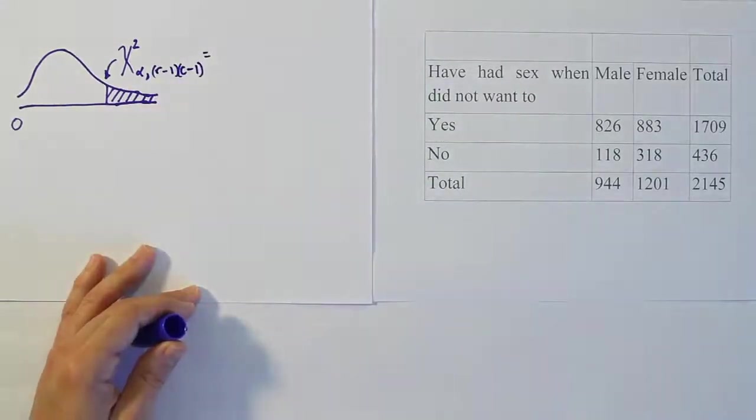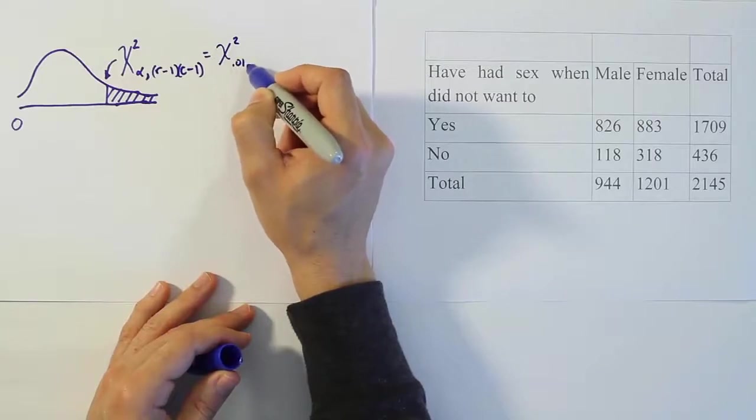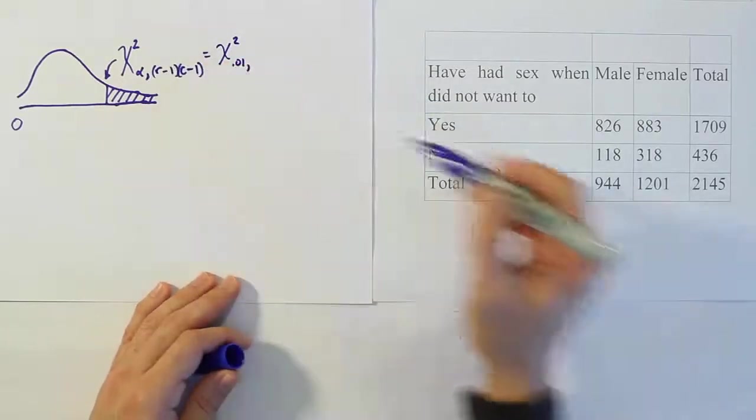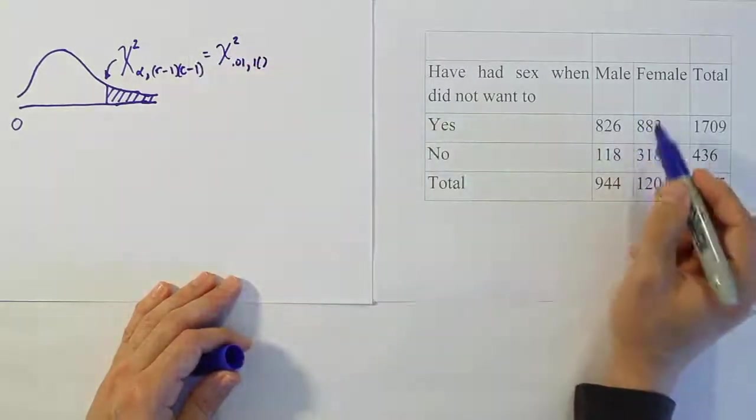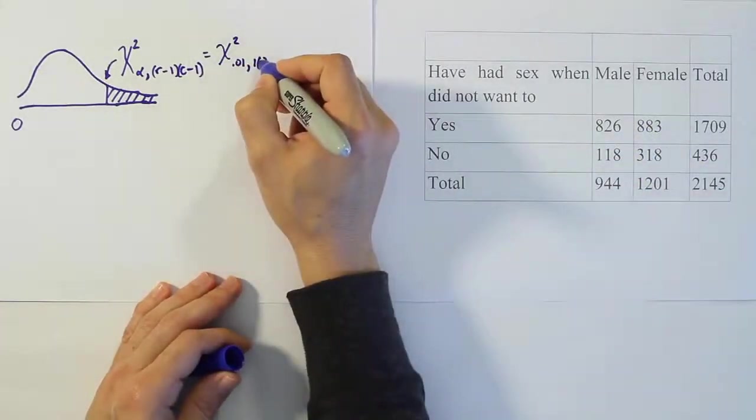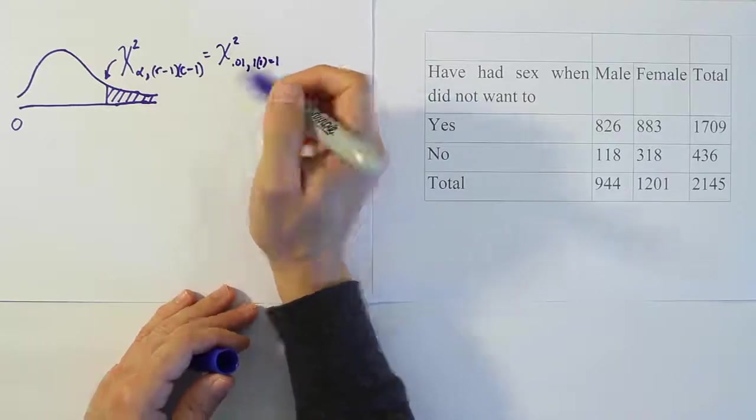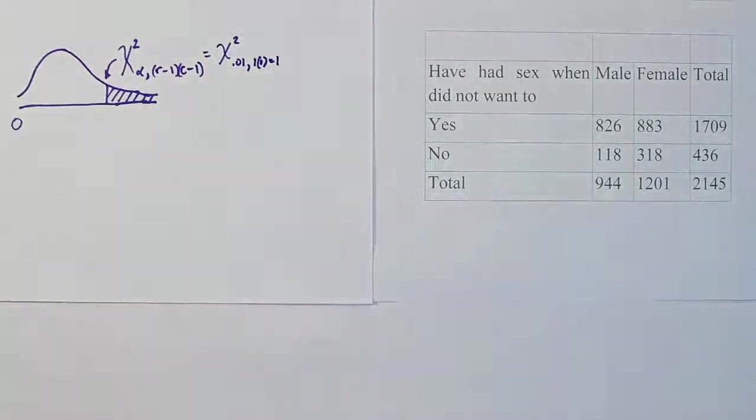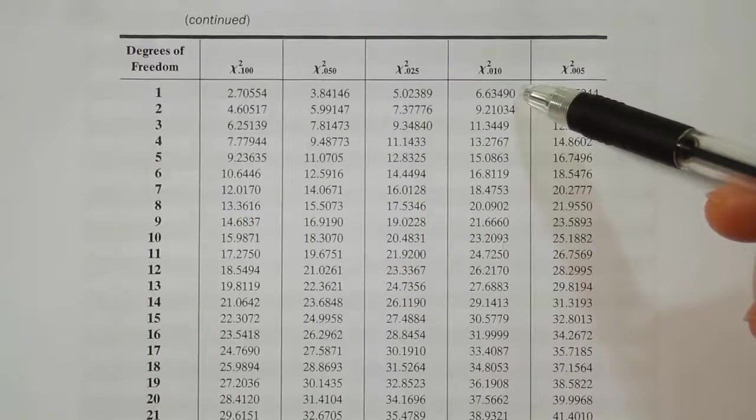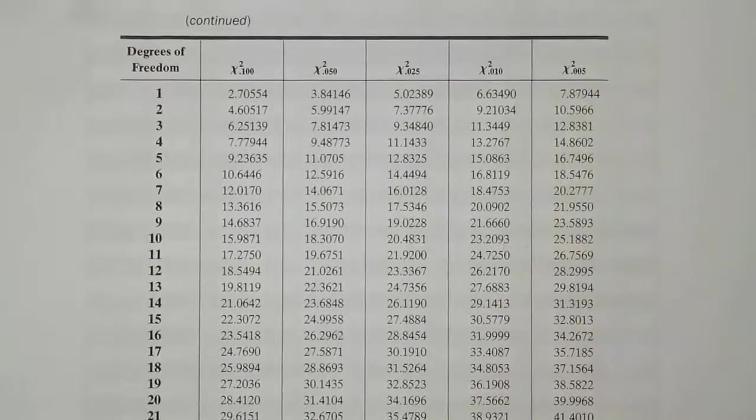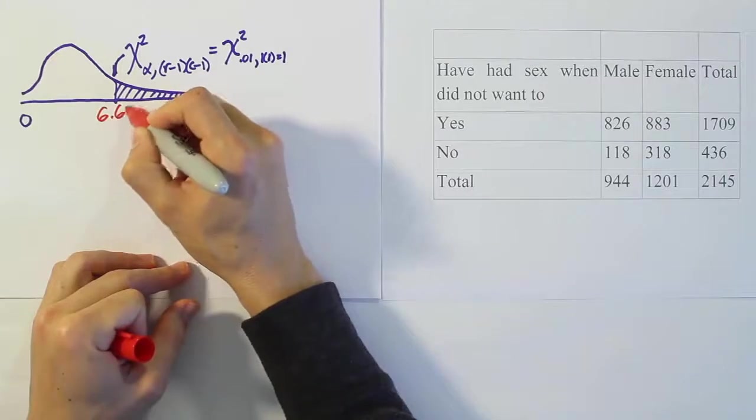In this case, alpha if you remember was 1%. So we're dealing with a chi-squared 0.01 value, where the degrees of freedom are specifically the number of rows, we have 2 rows minus 1, which is 1, times the number of columns, we have 2 columns minus 1 is 1. So it'll be 1 times 1, or 1. Let's go under the chi-squared table at 0.01 with 1 degree of freedom. We get 6.635.